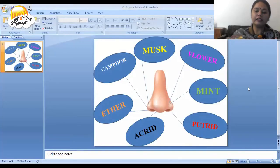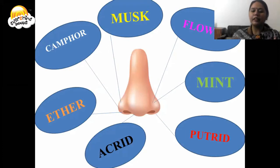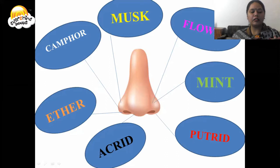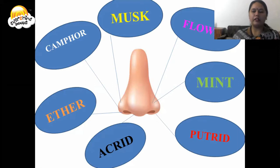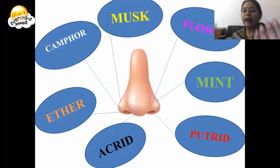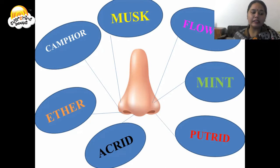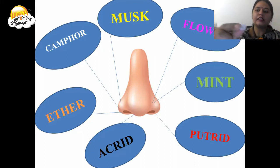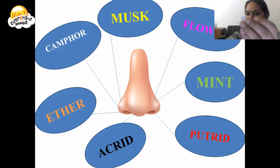Our nose is capable of smelling seven different types of smell. The first is camphor — small white square-shaped pieces often used in religious activities. The second is musk, which is used for making perfumes.